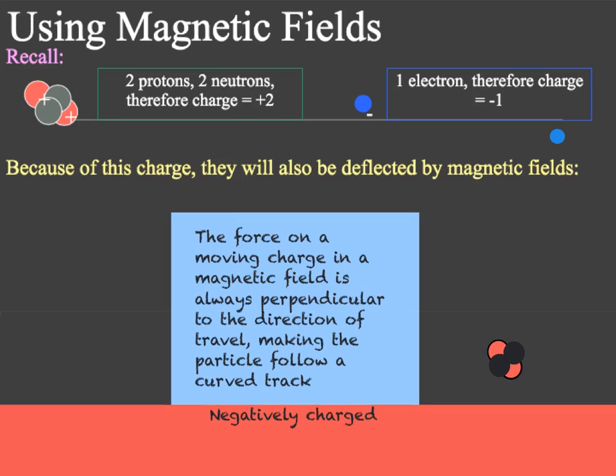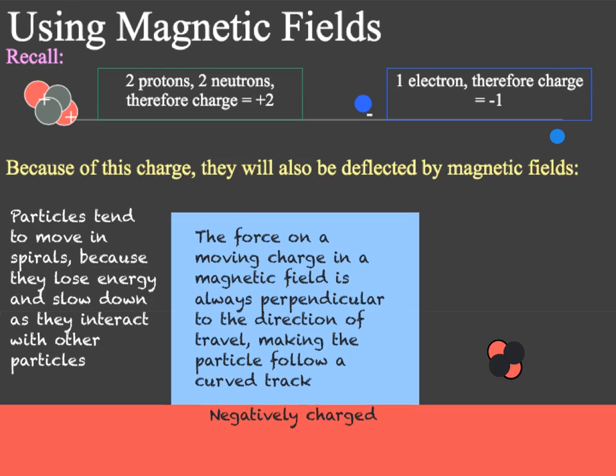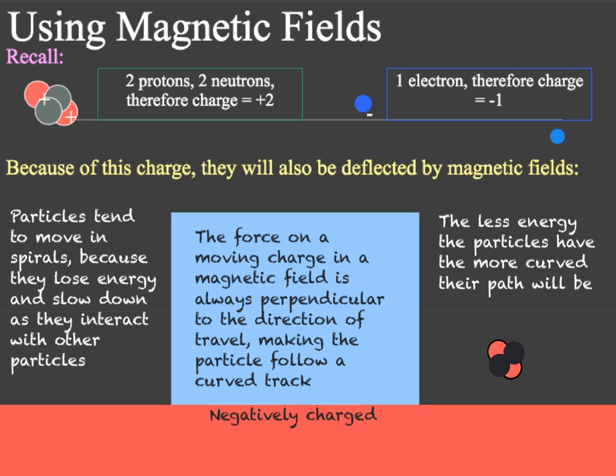Usually you will not see a neat circular pattern. Instead the particles will move in a spiral shape. This is because the particles will lose energy and slow down as they interact with other particles. And the less energy the particles have, the more curved their path will be. By using magnetic fields such as this, we can make charged particles move in a circular or spiral path. This is how we can use them in particle accelerators such as cyclotrons.